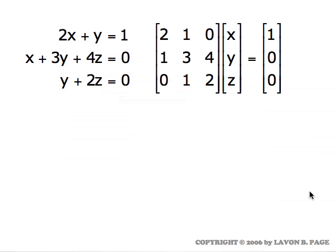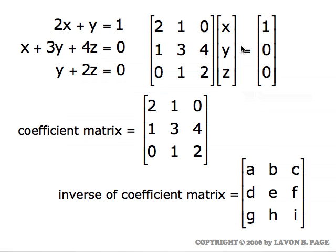Now let's carry on a bit further and look at this system in particular. We saw previously that this system of equations carries exactly the same information as the single matrix equation. The reason is that if you actually do the multiplying, you get two times x plus one times y plus zero times z equals the one here, which is the first equation. Similarly, you multiply out the second row and get the second equation, and so forth.